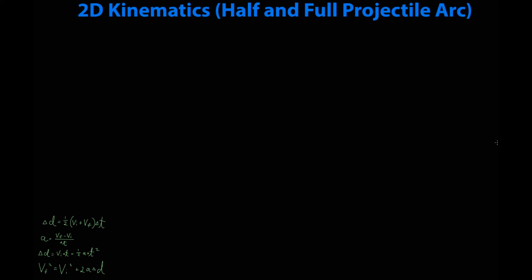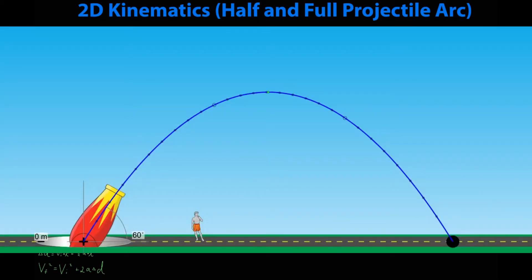We're going to do problems involving the half arc and full arc projectiles. Now just to show you what I'm talking about, this is an example of a full arc. The projectile is considered to start from ground level, rise upward and return back down, and the problem is over when it returns back to ground level.